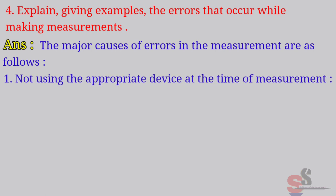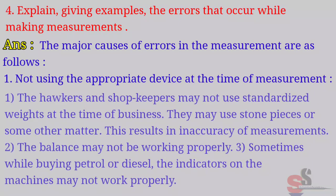Not using the appropriate device at the time of measurement. The hawkers and the shopkeepers may not use standardized weights at the time of business. They may use stone pieces or some other matter. This results in inaccuracy of measurements. The balance may not be working properly. Sometimes, while buying petrol or diesel, the indicators on the machine may not work properly.